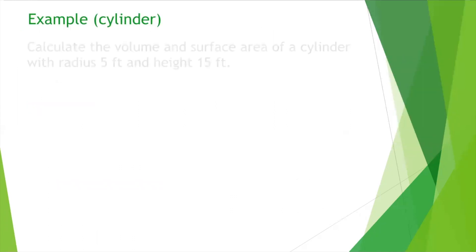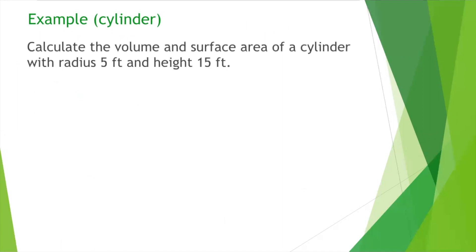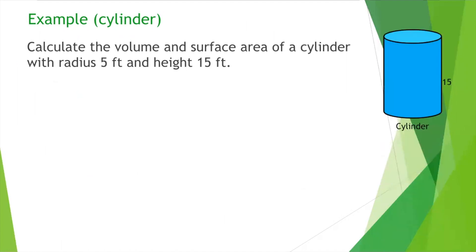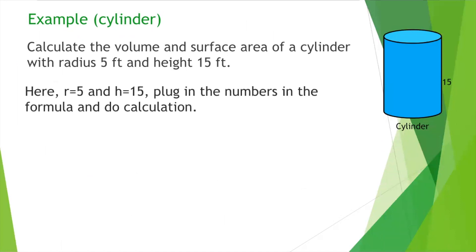Now let's do a problem related to the cylinder. Calculate the volume and surface area of a cylinder with radius 5 feet and height 15 feet. We have to simply use the formula and plug in the numbers.